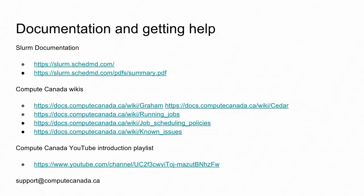To get started, I'll go over some documentation. The scheduler we're using is the Slurm scheduler. You can find all kinds of documentation for this online, and we've got the links here. There's also a link to a two-page cheat sheet with a bunch of Slurm scheduler commands. The Slurm commands go beyond just submitting jobs — they also give you tools for monitoring jobs, the queue, and the system itself.